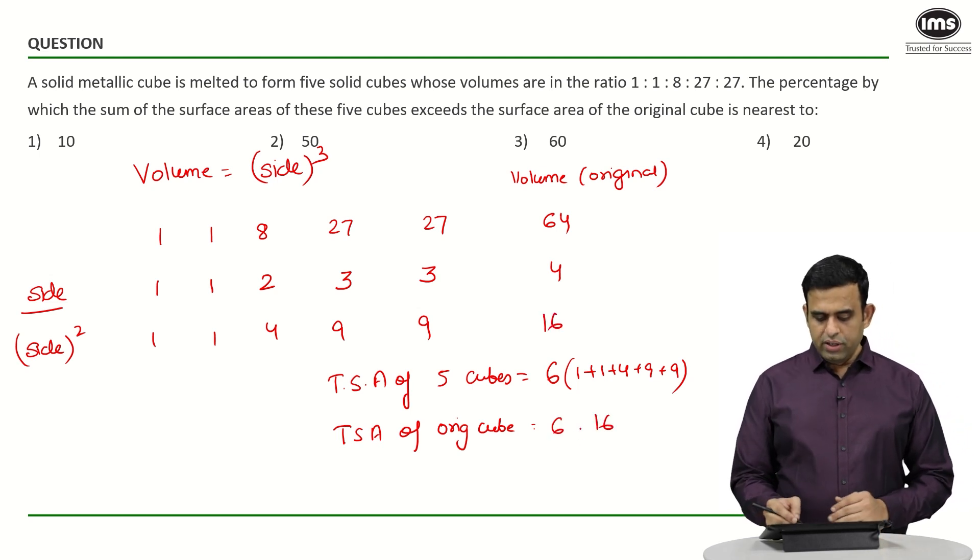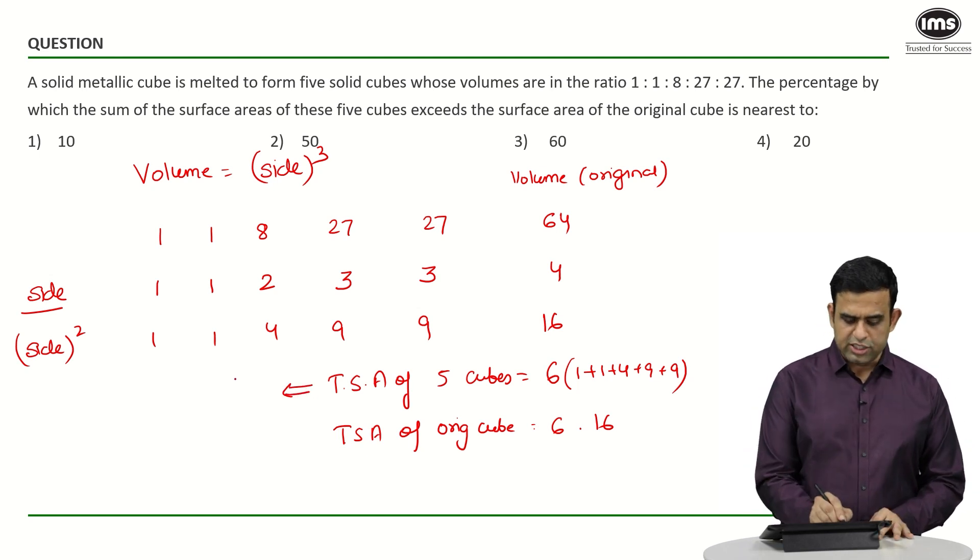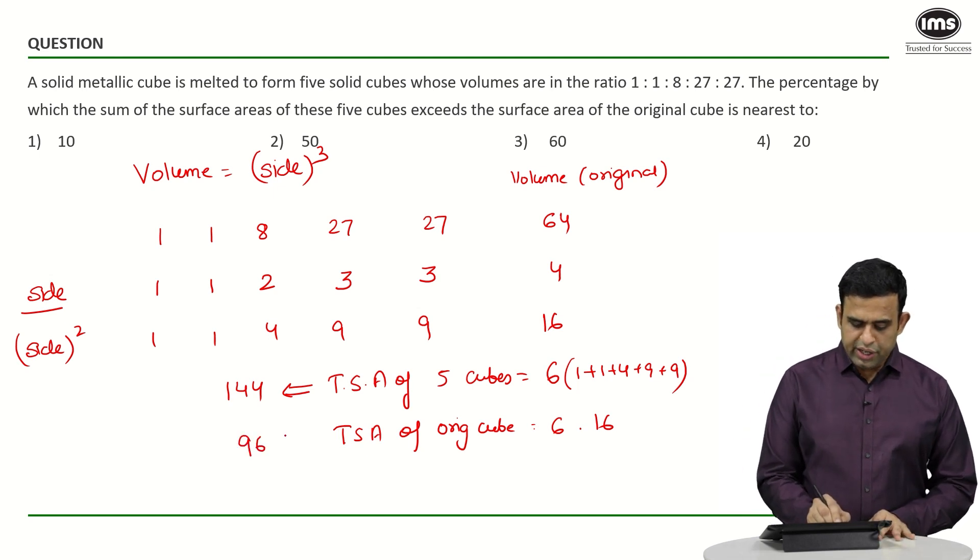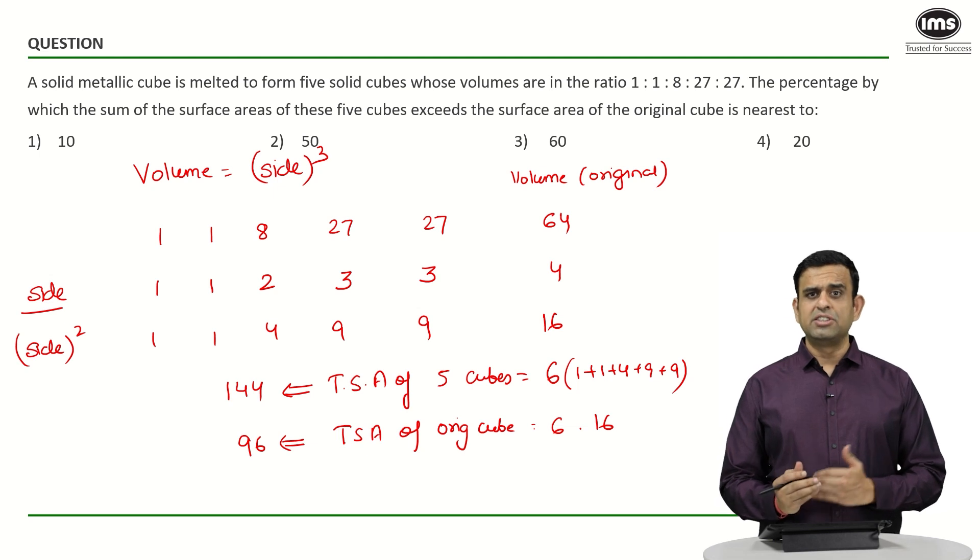If we compare, we get this part as 6 × 24 = 144, and this part becomes 96.